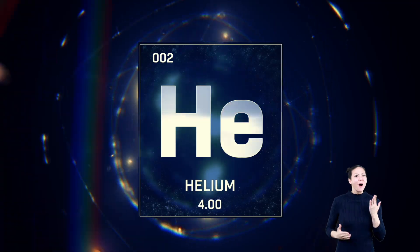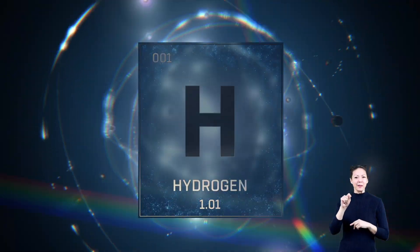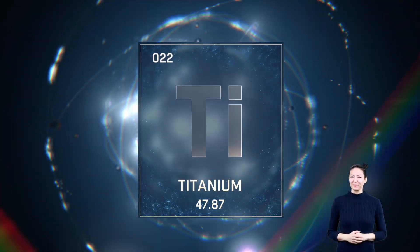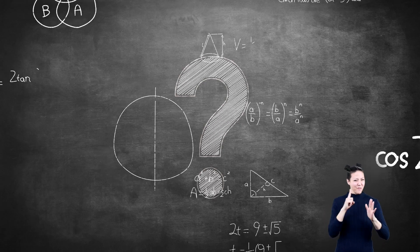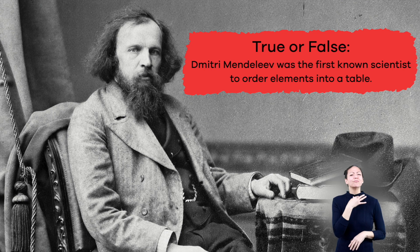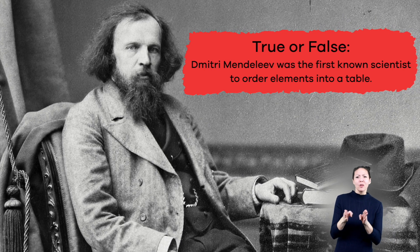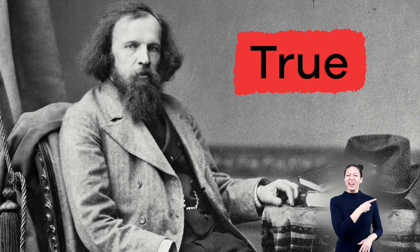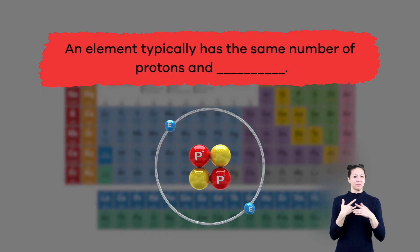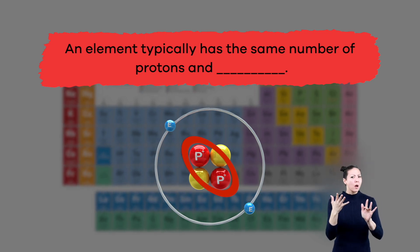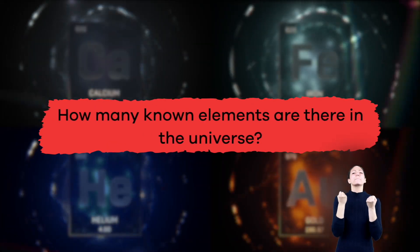The best part: we can find out all of the same information for every other known element, all thanks to the periodic table! Now it's time to review. True or false: Dmitri Mendeleev was the first known scientist to order elements into a table. Fill in the blank: an element typically has the same number of protons and blank. How many known elements are there in the universe?